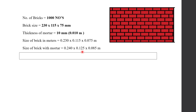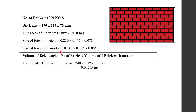To get the volume of brickwork, you have to remember a simple formula: volume of brickwork equals number of bricks multiplied by volume of one brick with mortar. If you multiply the three dimensions, you will get the volume of one brick with mortar, which is 0.00255 cubic meter. We have a thousand number of bricks in this wall, so volume of brickwork equals 1000 multiplied by 0.00255, which equals 2.55 cubic meter.